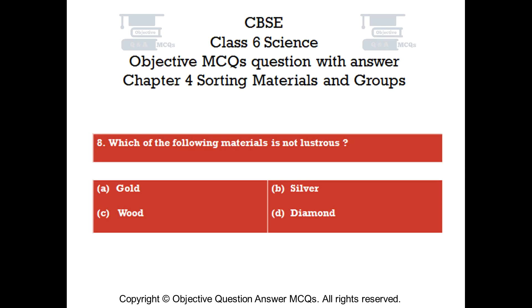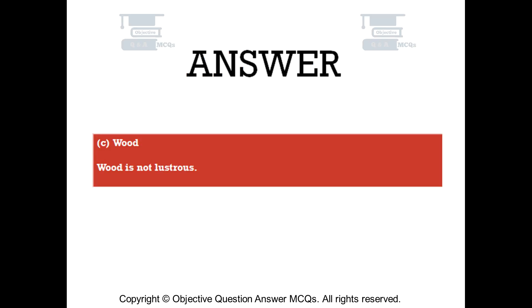Question number 8. Which of the following materials is not lustrous? Option A: Gold. Option B: Silver. Option C: Wood. Option D: Diamond. The right answer is Option C — Wood. Wood is not lustrous.